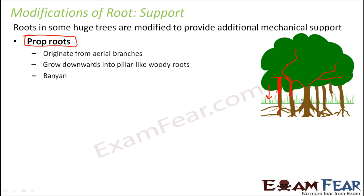These roots are called prop roots. They grow downwards into pillar-like woody roots. Sometimes prop roots also become so thick that it becomes difficult to distinguish which is the main root and which are the prop roots. The most common example of prop roots is the banyan tree.